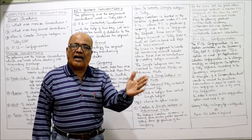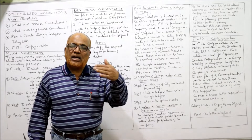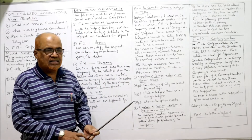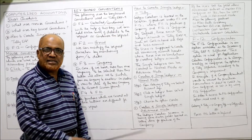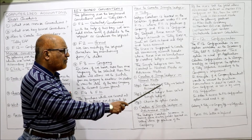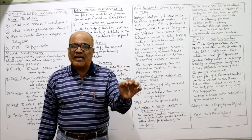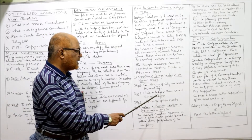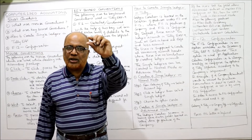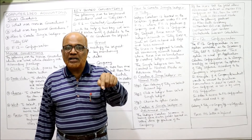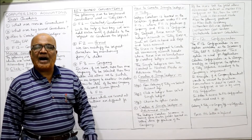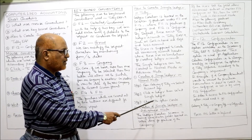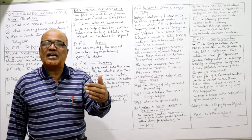First we decide whether to create the ledger account in normal mode or advanced mode. Creation of a single ledger in normal mode involves the following steps: Step 1 — from the Gateway of Tally, select Account Info. Step 2 — from Account Info, click on Ledger, then select Single Ledger. Step 3 — choose Create. These are the three steps involved in creating a single ledger account in normal mode.